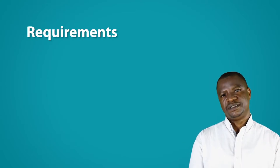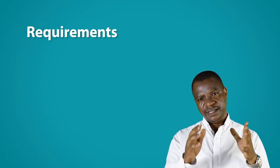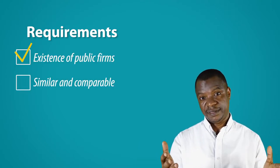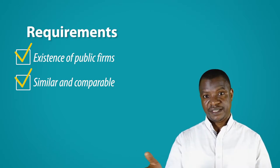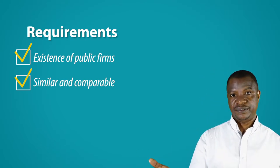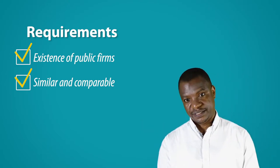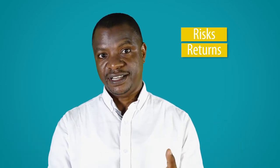What is the requirement for selecting a peer group? Relative valuation requires the existence of public firms that are similar and comparable. Similar firms can be identical from the same sector or same product, same service, or competitors. Some analysts simply use sector or industry to define and select peers. This practice is for simplicity purposes only, assuming that firms in the same sector or industry should have similar value drivers, which are risk, returns, and growth.